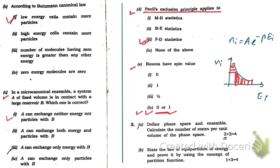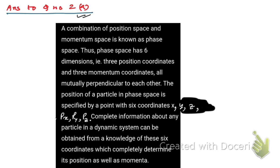Now let's answer question number 2a: define phase space and ensemble, and calculate the number of states per unit volume of the phase space. Let me show you how to write this answer.